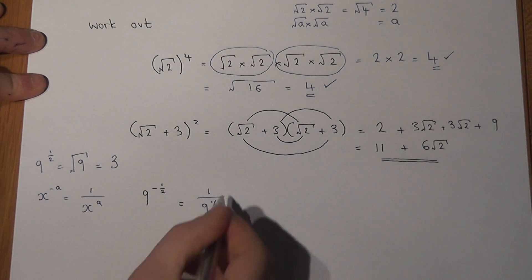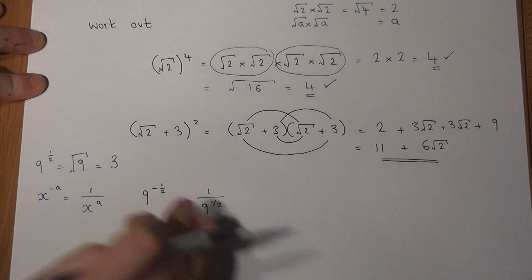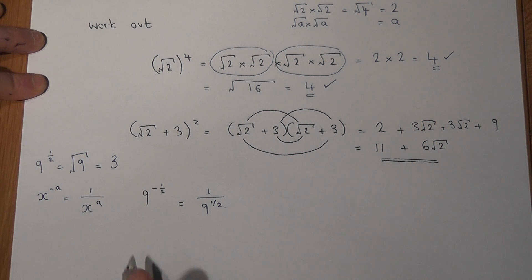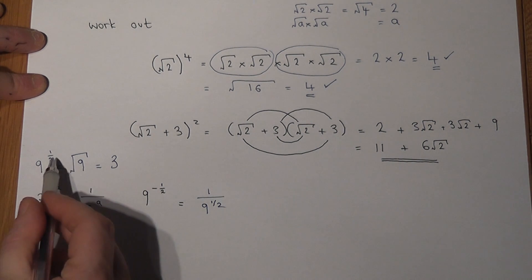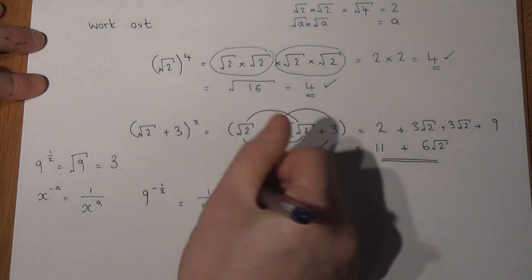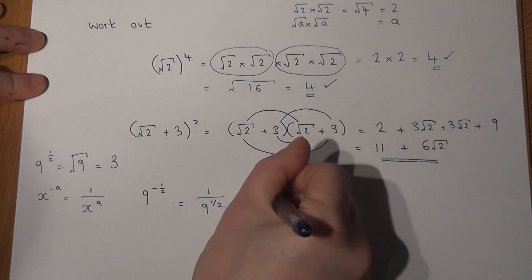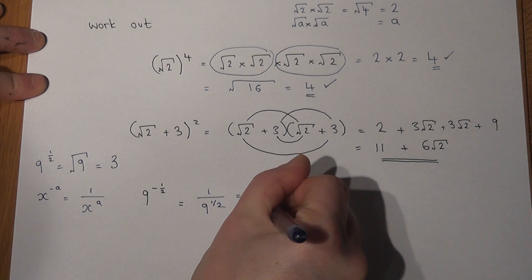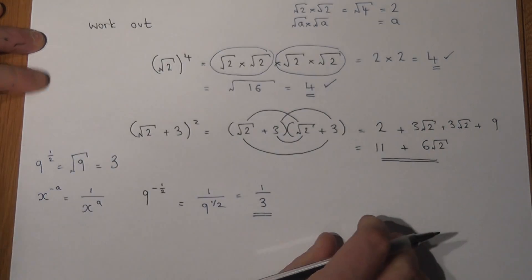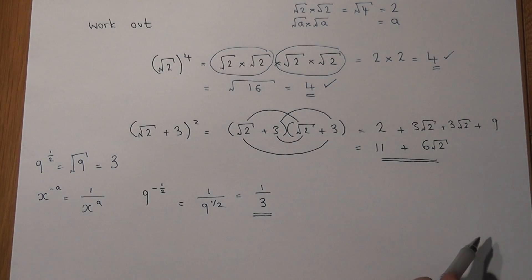So the negative power becomes 1 over. Nothing else has changed yet. However, I know that 9 to the power of a half just equals 3. So I can write this just as 1 over 3, which is a nice, accurate fraction as an answer.